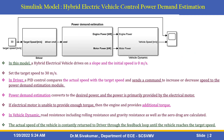Let us see the Simulink model. This is the Simulink model — it shows the power demand estimations. In this model, a hybrid electrical vehicle drives on a slope and the initial speed is 0 meters per second. The target speed is set up to 30 meters per second. The scope shows the actual speed of the vehicle constantly returning to the driver through the feedback loop until the vehicle reaches the target speed.